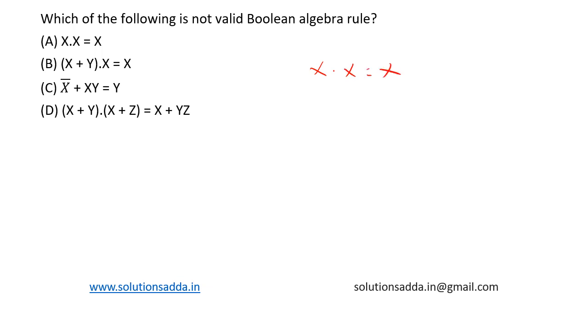This is true because it is based on idempotent law. Idempotent law states that A dot A equal to A. A can be either 0 or 1, so 0 dot 0 equal to 0, 1 dot 1 equal to 1. So this is a valid algebraic rule, this is not the right choice.